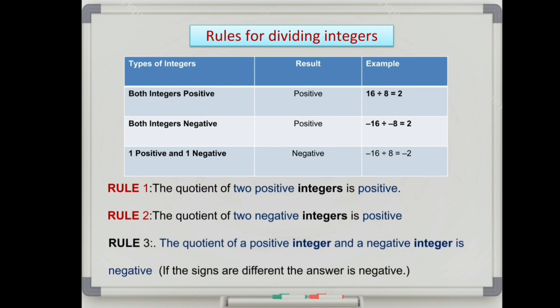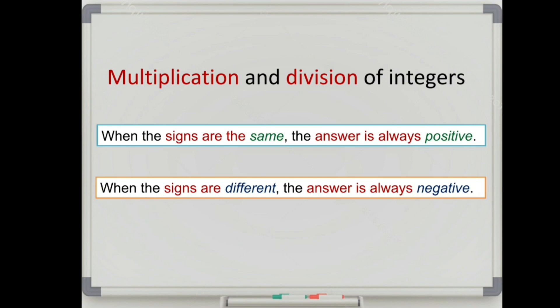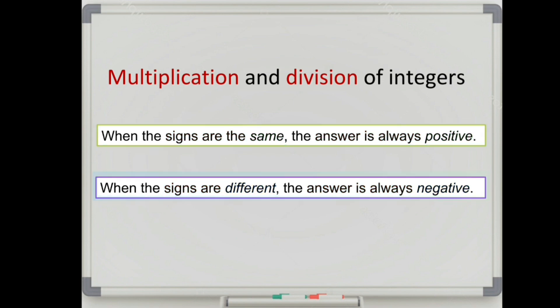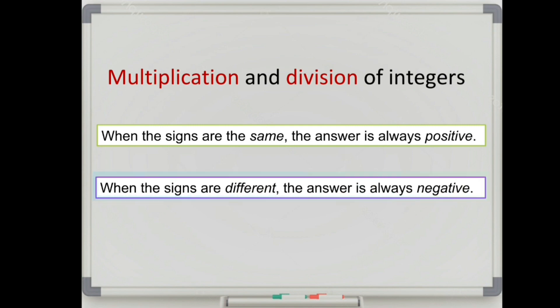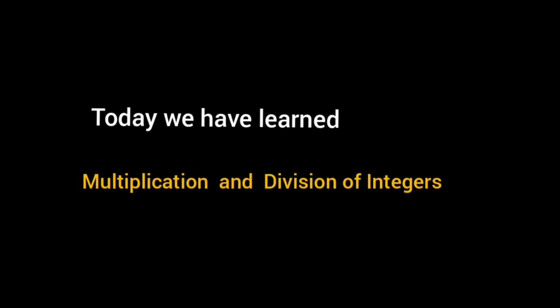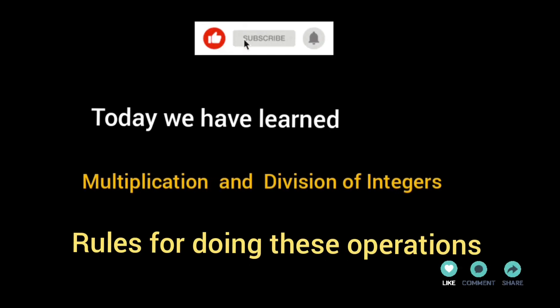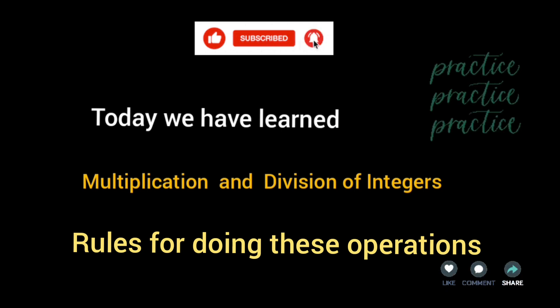Keep this in mind: the two most important things to remember when multiplying or dividing two integers are — when the signs are the same, the answer is always positive; when the signs are different, the answer is always negative. Isn't it easy? I am sure you must have understood the concepts of multiplication and division of integers.